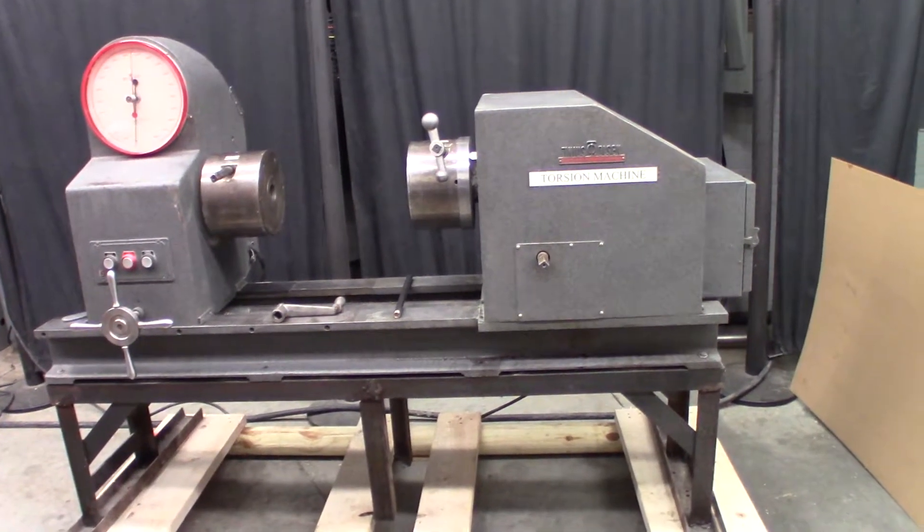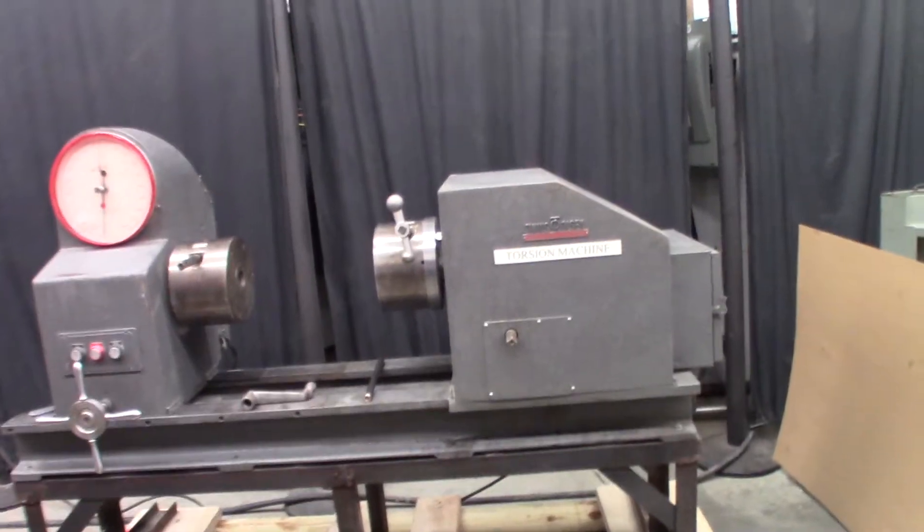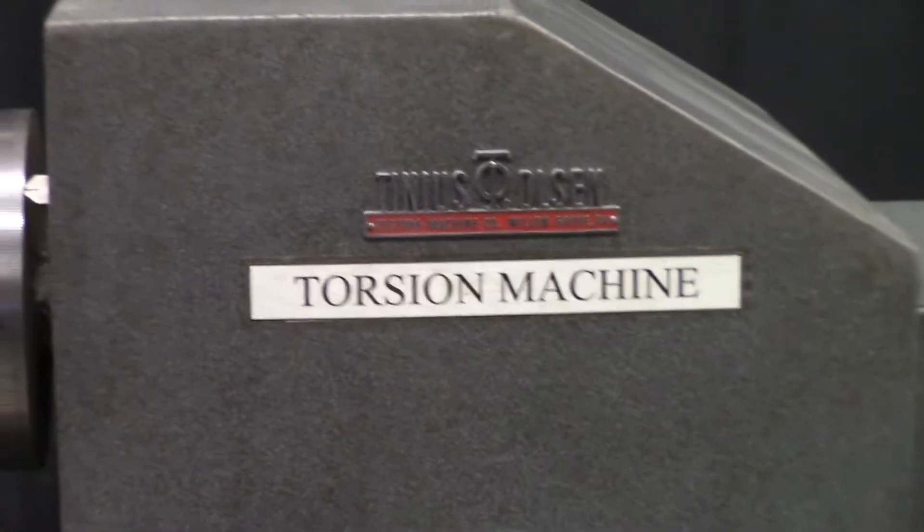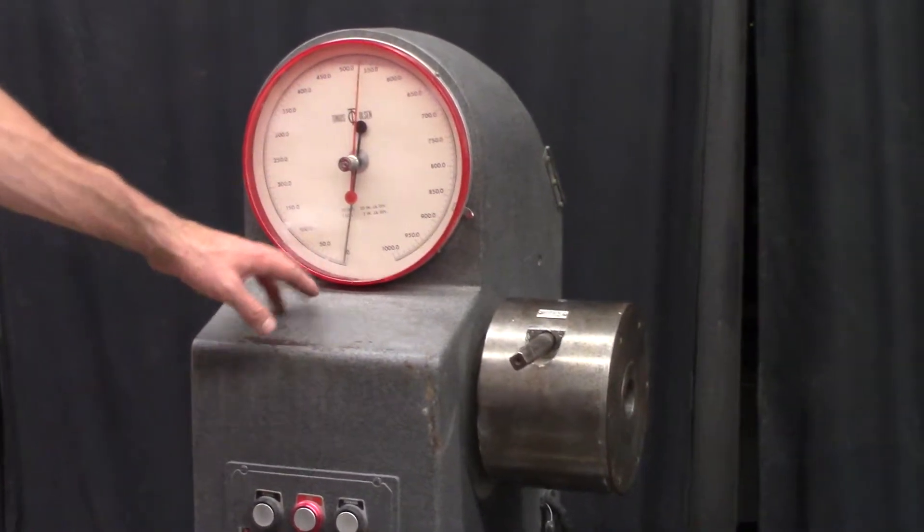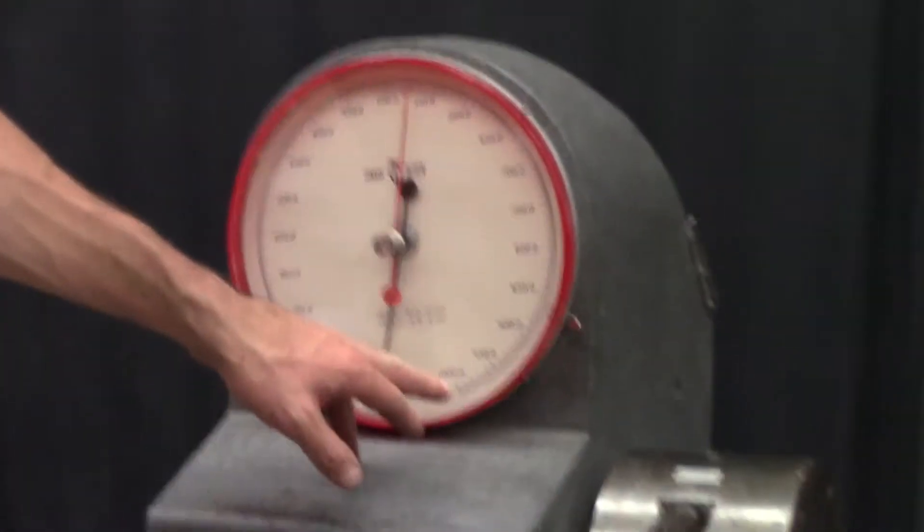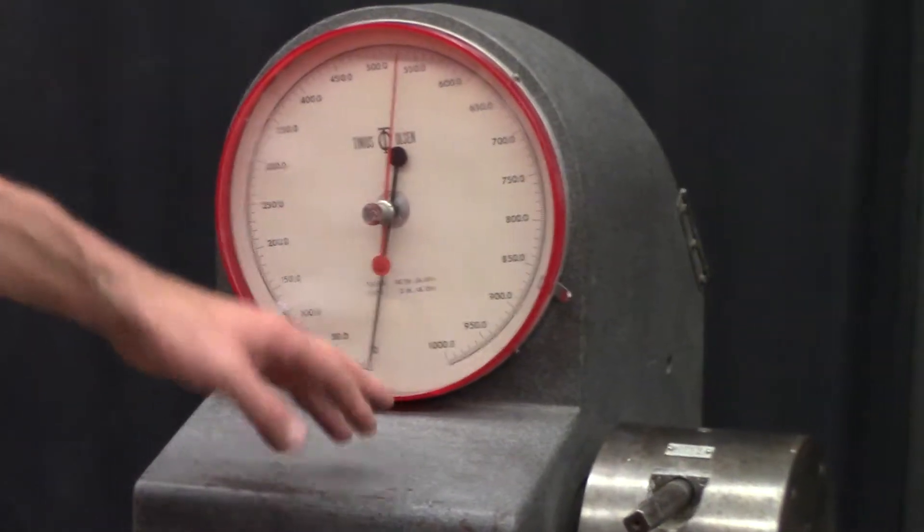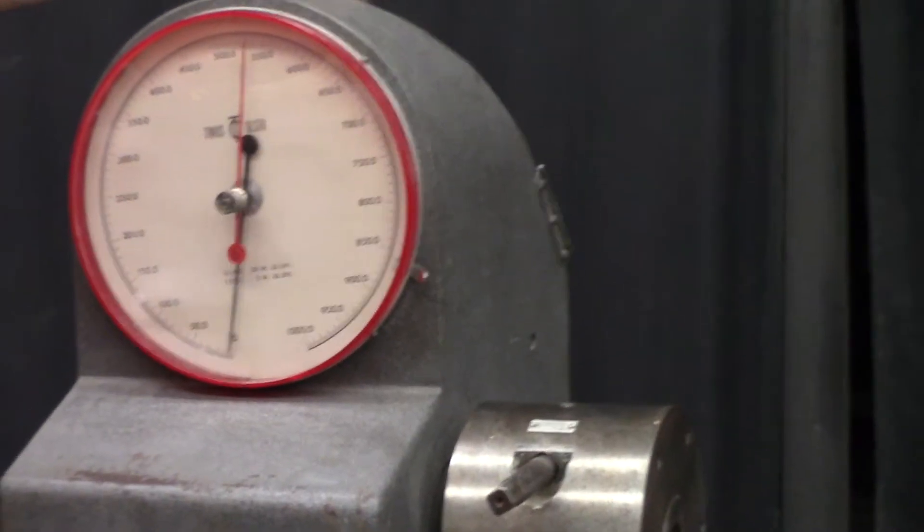Alright, here we're going to do a quick test on this Tinius Olsen torsion machine. This machine has a rating of 10,000 inch-pounds and the gauge is a dual range gauge. It goes from zero to a thousand inch-pounds or zero to ten thousand inch-pounds, and you select that by changing a beam position inside the cabinet. It's a real easy thing to change.